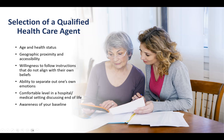The first factor is age and health status. A lot of people automatically want to use a spouse or sibling who may be around the same age. Looking into the future — if my sister is 90 and I'm 85, by the time I need her to step in, she might have her own health compromise and be unable to serve.